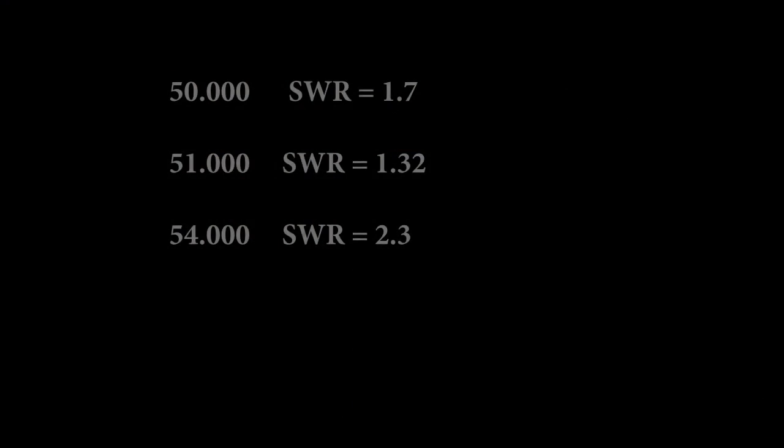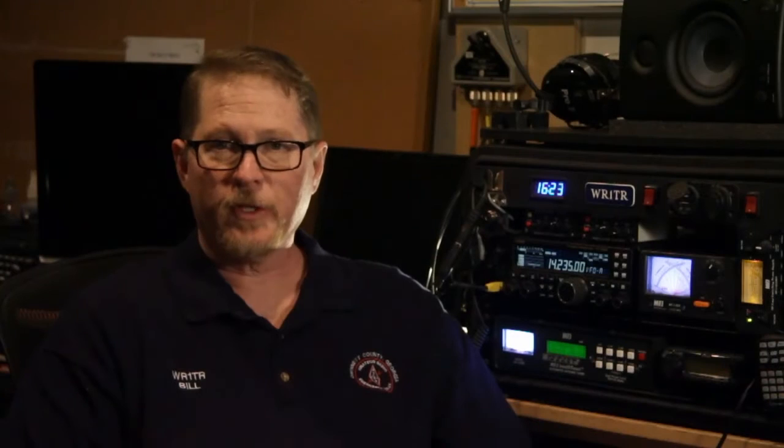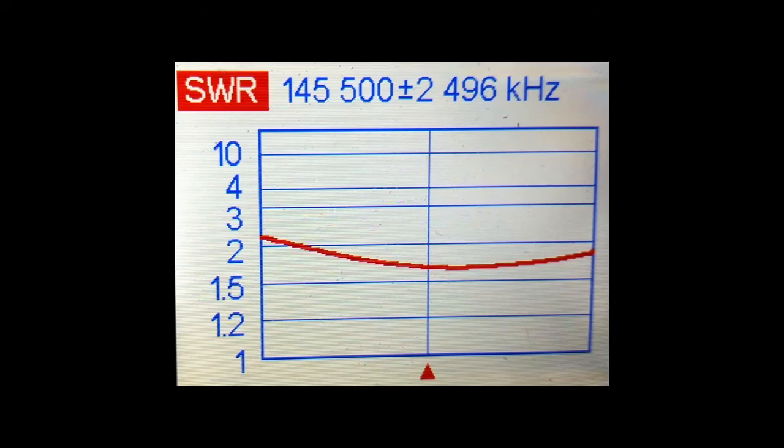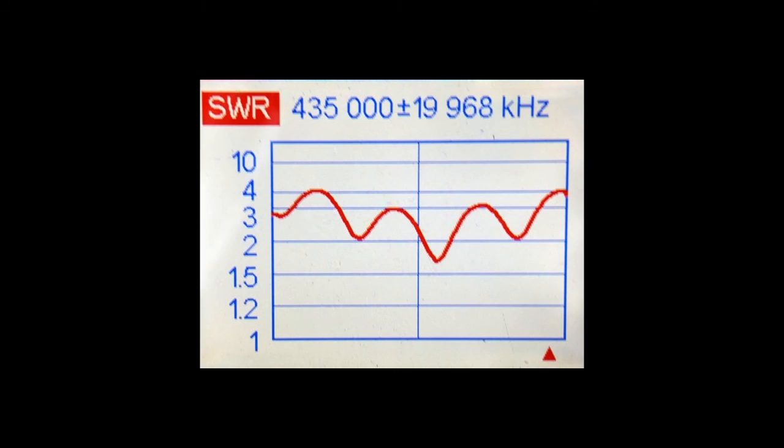The 6-meter hex beam is a modest performer with 5.5 dBi. Where it really comes out ahead is the 20 dB front to back and the noise reduction that comes along with that. We tested the antenna with a RigXpert antenna analyzer. At 50 megahertz, the SWR was 1.7 to 1. At 51 megahertz, it was 1.32 to 1. And at 54 megahertz, it was 2.3 to 1. Not bad overall. It's a pretty nice curve. As you can see, it's a good performer at 2 meters as well. Not so good at 70 centimeters.